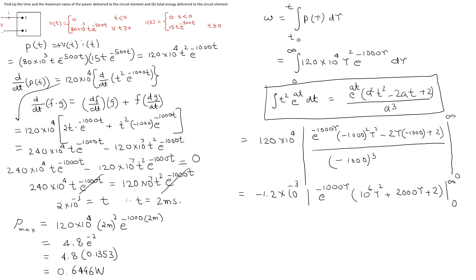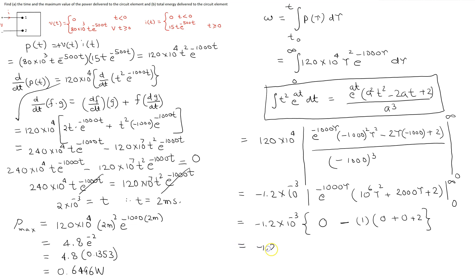When we substitute the limits: substituting the upper limit, e raised to the power minus infinity makes the whole term 0. So we get minus 1.2 into 10 raised to the power minus 3 times 0. When we substitute the lower limit, e raised to the power 0 is 1, giving 1, and the polynomial term becomes 0 plus 0 plus 2. Substituting the lower limit requires a minus sign, and simplifying this gives 2.4 millijoules.